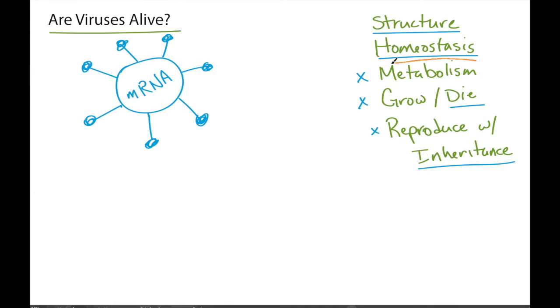These three properties, metabolism, growth, and reproduction, require another type of cell.